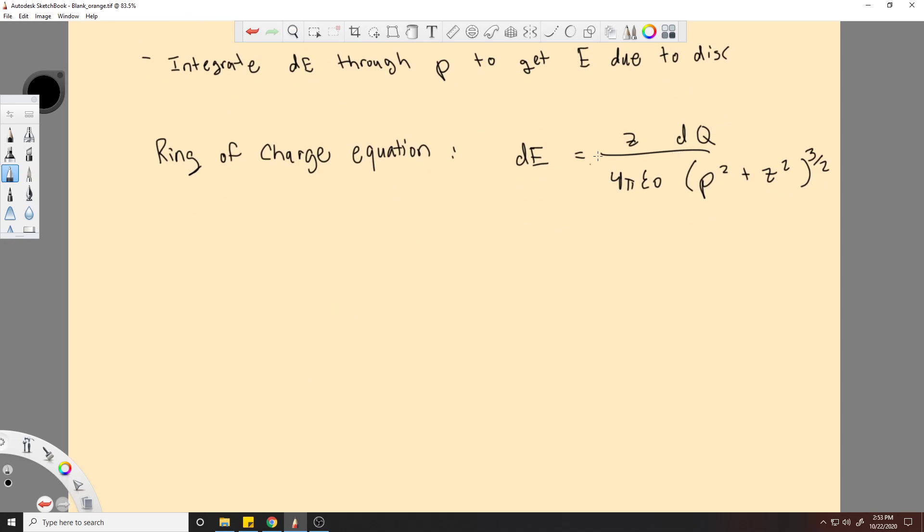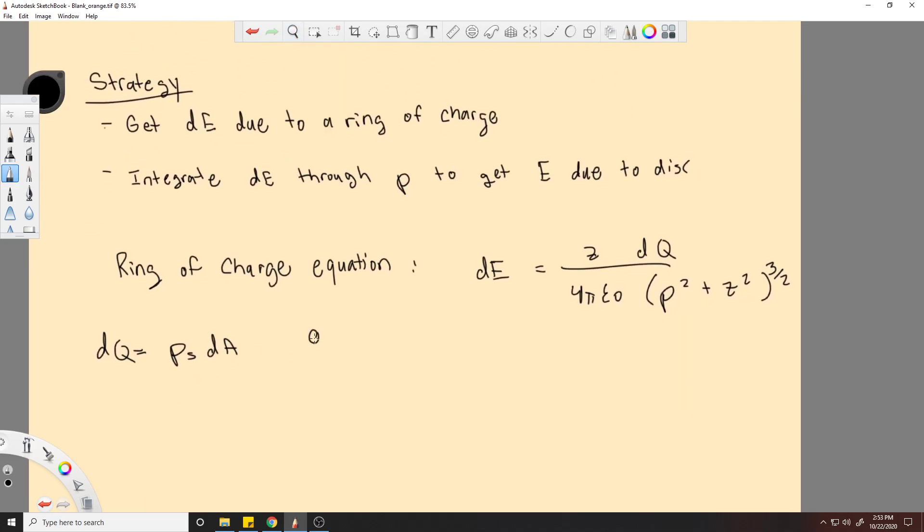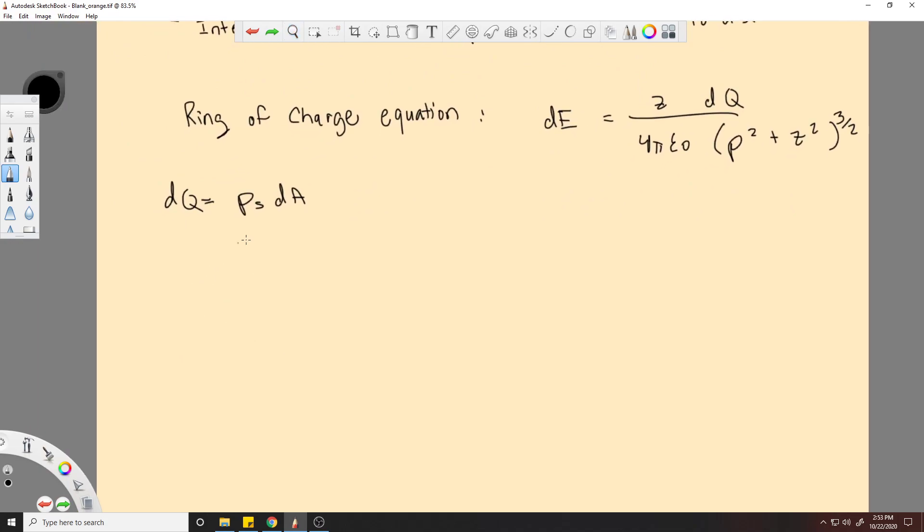So we have this. The first thing we need to do is find out how dQ relates to our problem. So dQ in a ring charge is going to be the rho s, the surface charge, times some area. Because you can imagine that this ring has some sort of area, and rho s is like charge over some area. So that gives you the amount of charge you have. So we need to find out what dA is in our problem to further expand on this dQ.